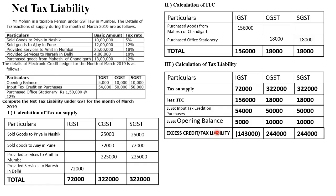Always remember: if they have given you an electronic credit ledger, you can set off the excess credit against others. But if it were an electronic cash ledger, the sum would end here. Since we have an electronic credit ledger, we proceed to Step 4 — adjust the excess credit.